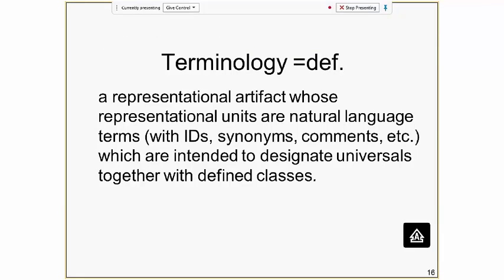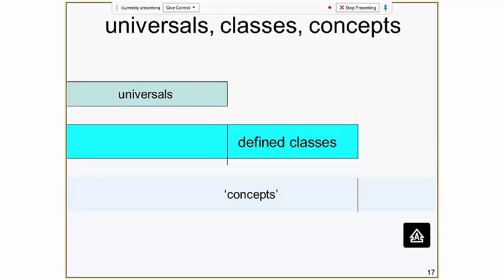A terminology is a representational artifact whose representations are natural language terms intended to designate universals together with some defined classes. There is a third dimension called 'concepts'. I never use this term and strongly recommend that you never use it unless you are doing an ontology for the study of conceptual thinking. In ontology, people use the word 'concept' in all kinds of confused ways, and the best strategy is simply not to use the word.